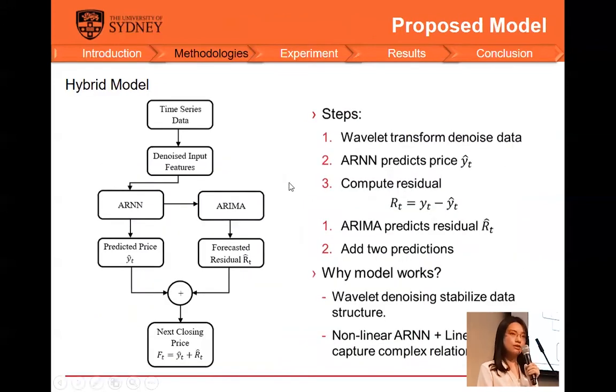The flowchart on the slide shows how the three methods are combined. The original data is denoised via the Wavelet Transform. After that, the ARNN model is trained and predicts the next price, and the residual series between the ground truth and ARNN predictions can be calculated. The ARIMA model takes the residual series as the input and predicts the future residuals on the test set. Finally, the two forecast results are combined to give the final output.